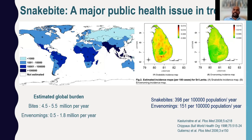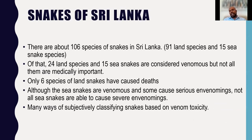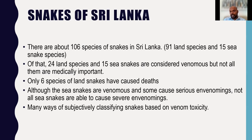Within the country, the landscape of snake bites and envenomings greatly differs. In Sri Lanka, there are about 106 species of snakes - 91 land species and about 15 sea snakes. Of that, only 24 land species and 15 sea snakes are considered venomous, but not all of them are medically important. That is the key point. Only six species have reportedly caused deaths, and there may be unreported deaths we don't know about.